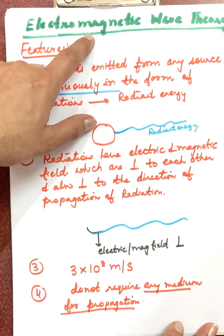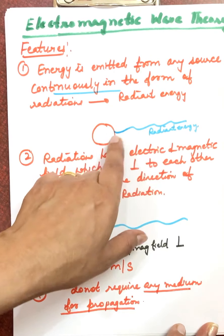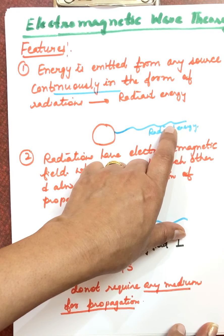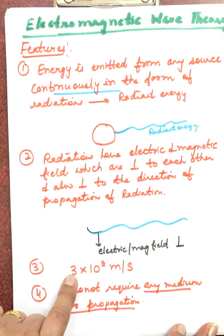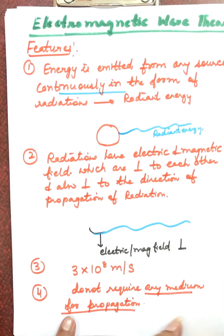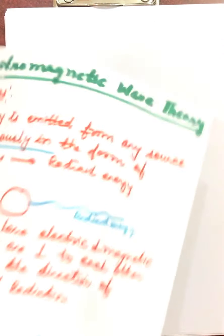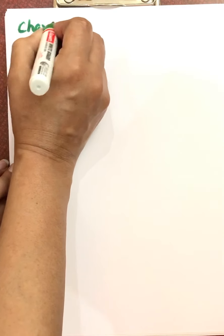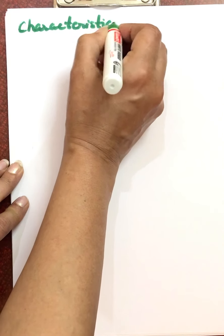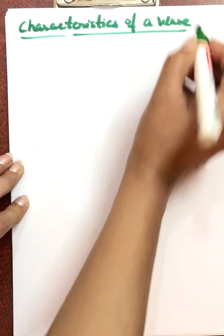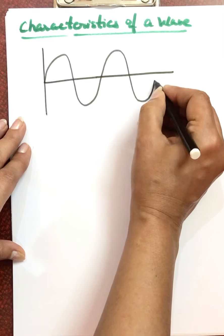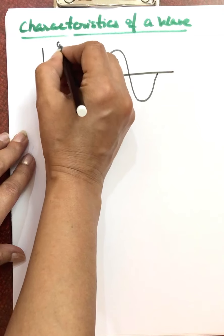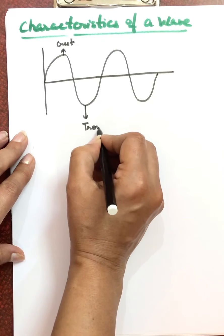So to summarize electromagnetic wave theory: radiations are given out by a source continuously; they have electromagnetic fields perpendicular to each other and to the direction of propagation; all electromagnetic waves travel at the velocity of light; and they do not require any medium, even moving through vacuum. Now we move on to the characteristics of waves. Waves move forming crests — maximum upward displacement — and troughs — maximum downward displacement.